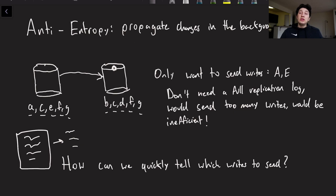However, in this case it doesn't really make sense to do that. The reasoning being that this database over here on the right is probably already going to have a lot of the information that is contained on the left, because of the fact that writes go to multiple places. So we don't actually want to send every write that might be in a replication log, but we actually only want to send select writes that are present on the node on the left but not present on the node on the right. So that's the whole point over here. We only want to send writes A and E.